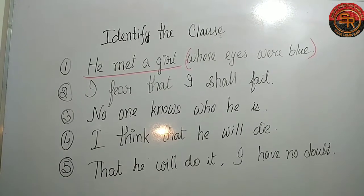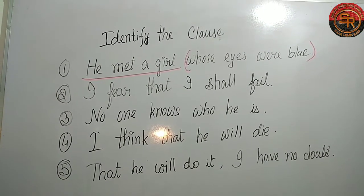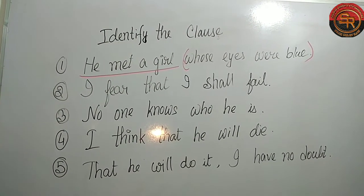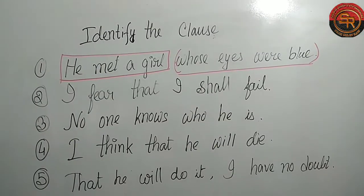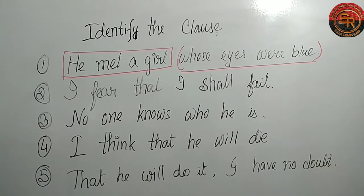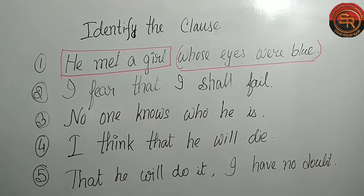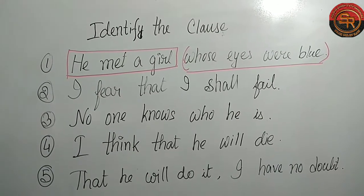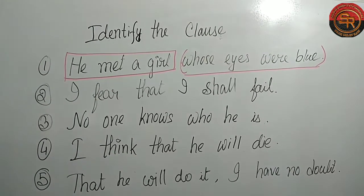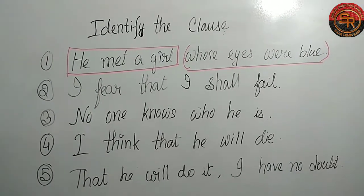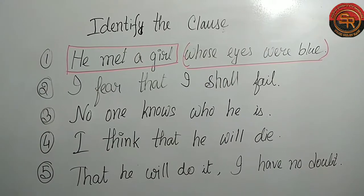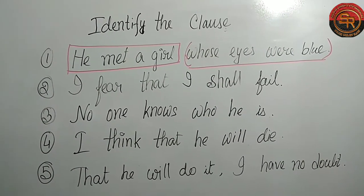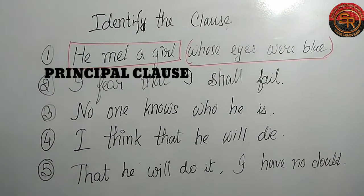Let's look at the first question: 'He met a girl whose eyes were blue.' In this sentence, 'he met a girl' comes at the beginning and completes the meaning on its own. Therefore, according to the rule, 'he met a girl' is our principal clause.